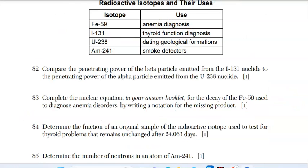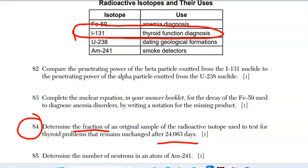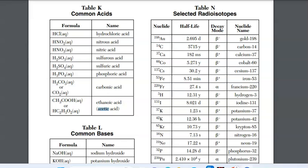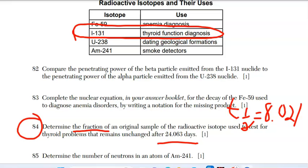We're almost done. We're checking out question 84. We're looking for the fraction of the original sample of the radioactive isotope used to test for thyroid problems that remains unchanged after 24.063 days. Well, I got to figure out what isotope is first. It's got to be the iodine-131. I get that right off the table. And I need the half-life for iodine-131. That we need to get from the reference tables. This is the second question in this set where it wasn't written down where you need to find something on those reference tables. So make sure if you think you're missing something, you probably are. In this case, we need the half-life for iodine and it's 8.021 days.